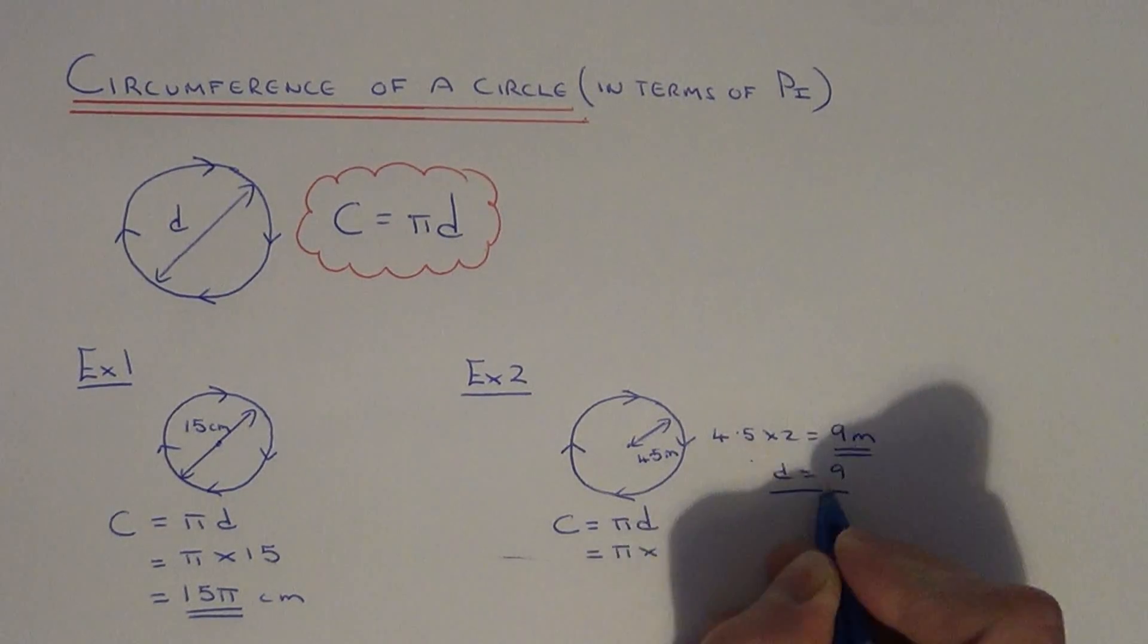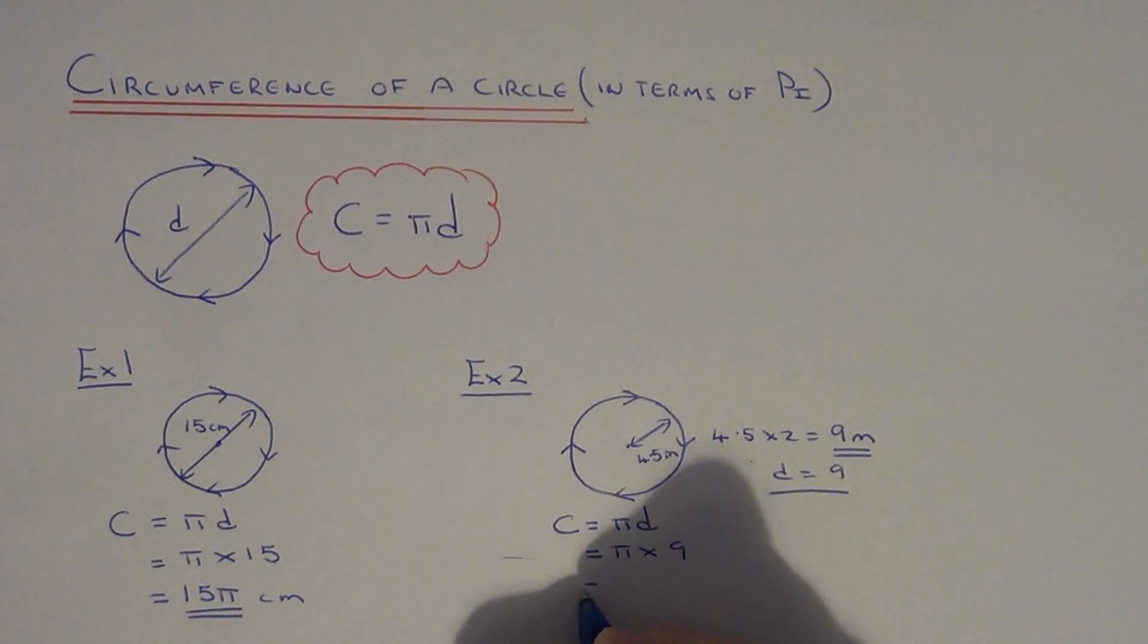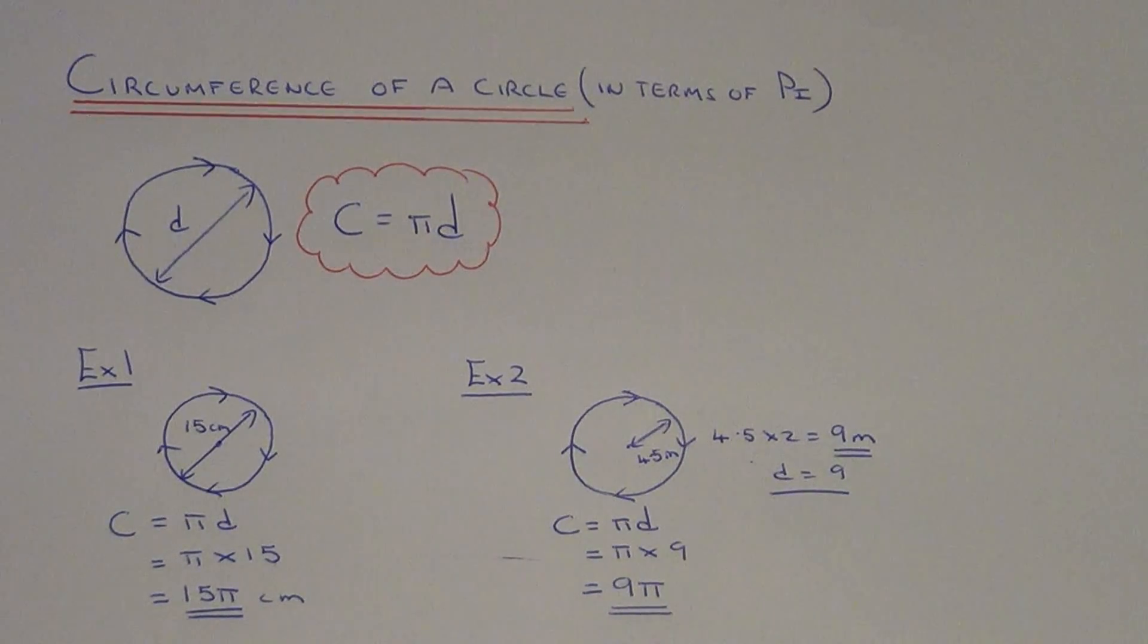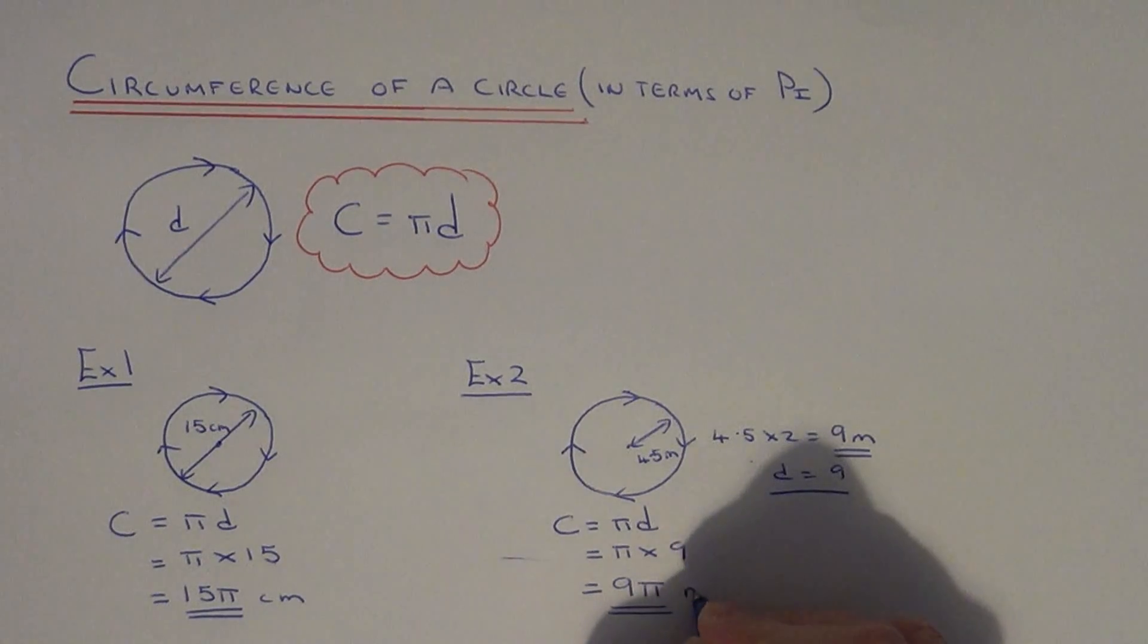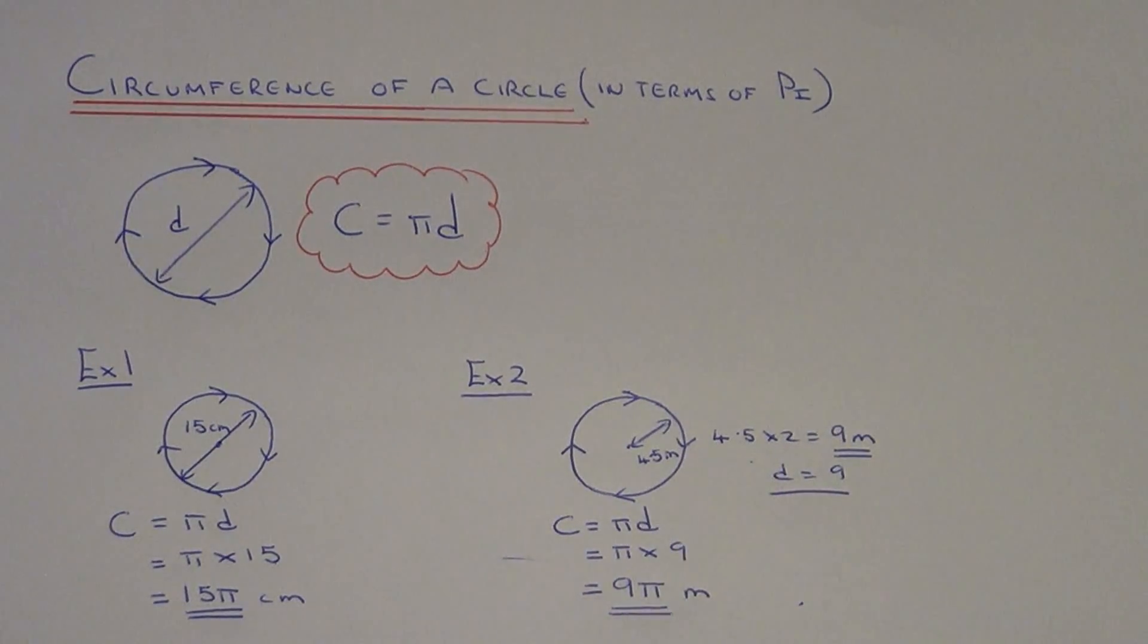Our next line we do pi times 9. Again, we're going to leave it as an exact answer, so put the number first, followed by pi. As an exact answer, the circumference is 9 pi metres. I'll see you next time.